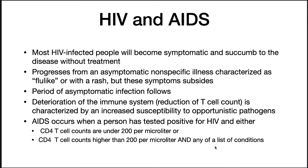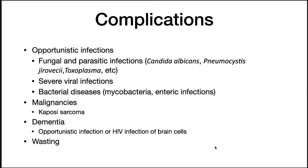Most HIV-infected people will become symptomatic and succumb to the disease without treatment. It progresses from an asymptomatic nonspecific flu-like illness with a rash, followed by a period of asymptomatic infection during which individuals can unknowingly spread disease. AIDS — acquired immune deficiency syndrome — is diagnosed when a person tests positive for HIV and either has CD4 T cell counts under 200, or has CD4 counts above 200 but develops AIDS-associated conditions. Complications include opportunistic fungal and parasitic infections, Candida albicans, Pneumocystis, Toxoplasma, bacterial diseases like tuberculosis, enteric infections, malignancies such as Kaposi's sarcoma, dementia from opportunistic or direct HIV infection of brain cells, and general wasting.